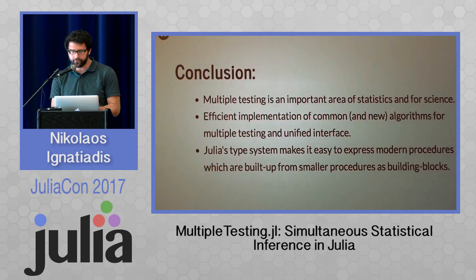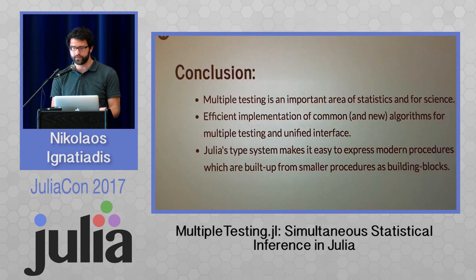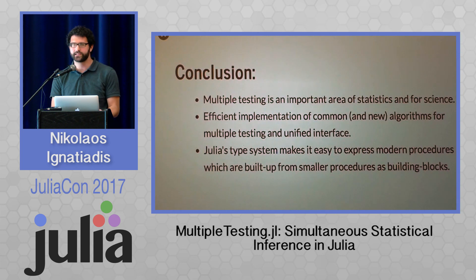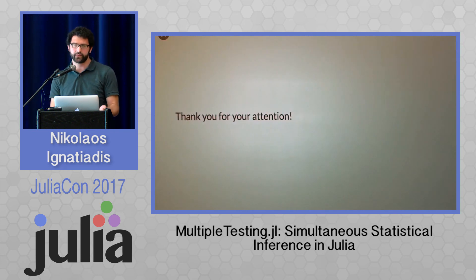I hope I have convinced you that multiple testing is a really important area of statistics and very important for reproducibility in science. Here we have efficient implementations of common and new algorithms for multiple testing in a unified interface. I find that lots of statistical ideas can be really easily expressed with Julia's type system, especially when procedures are made up from smaller building blocks. I'd really like to thank the Julia community, Julia Stats, and all of you for your attention.